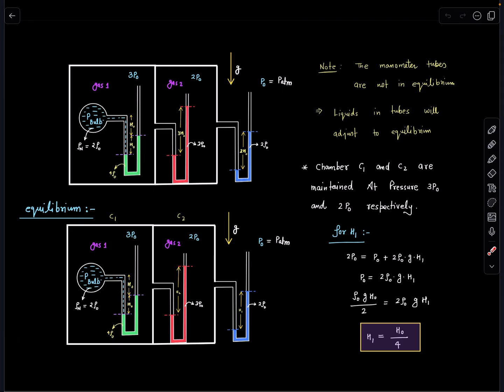The very first moment when you are going to make equations for this part, you will realize the manometer tubes are not in equilibrium. So the liquid in the tube will adjust itself in such a way that pressure balancing can take place. Liquid in the tube is going to adjust to the equilibrium.